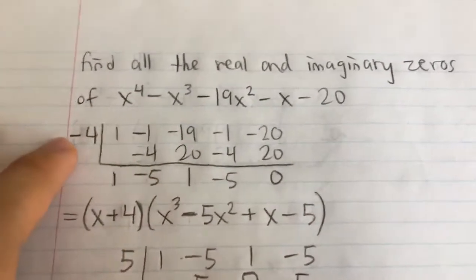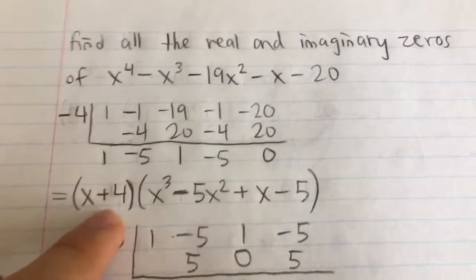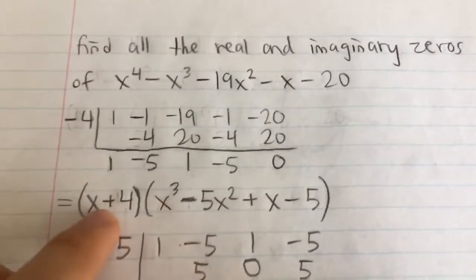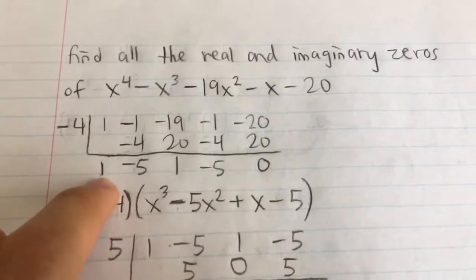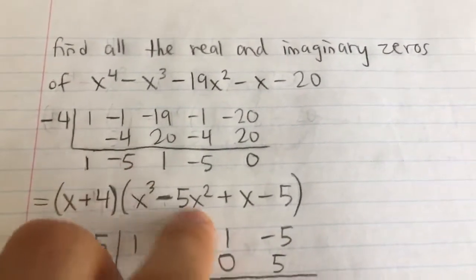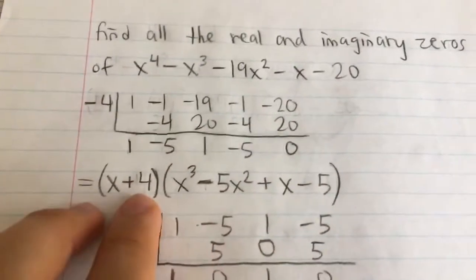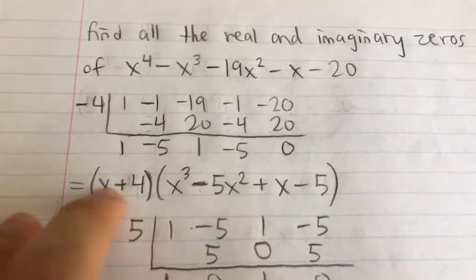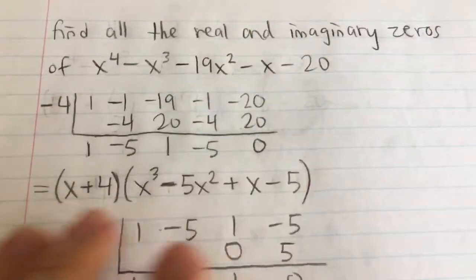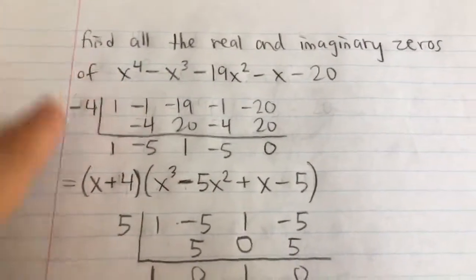So what this means is that x minus this number, x minus negative 4, in other words, x plus 4, is a factor. So I can factor it out. And what's left is x cubed, I bring down the power by 1, minus 5x squared plus x minus 5. And the reason we can factor it out is because now if I plug in negative 4 here, I'll get zero times something, the whole thing will be zero. You can tell that's a zero of this polynomial.